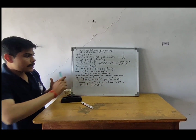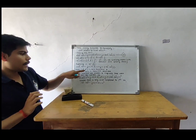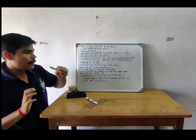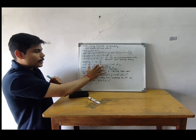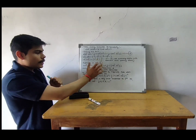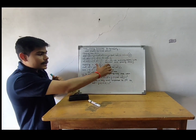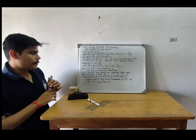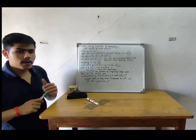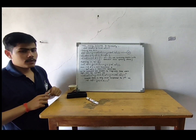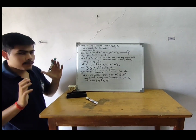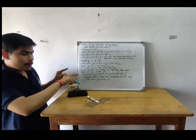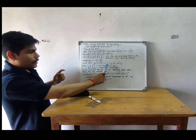Looking at equation 4 carefully, we can observe that the commutator [A, B] is an anti-Hermitian operator, whereas the anti-commutator {del A, del B} is a Hermitian operator. This leads to a problem involving imaginary parts. To overcome that, we take the modulus and square both sides of this equation.